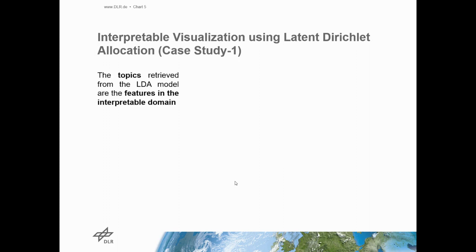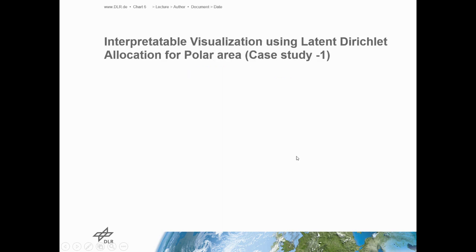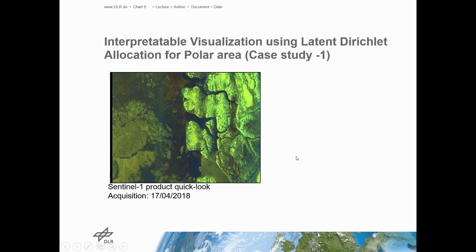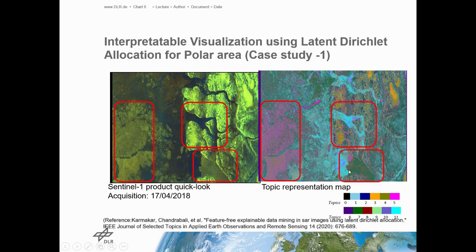The first case study produces interpretable visualizations using Latent Dirichlet Allocation. We used different levels of domain knowledge to produce different levels of interpretability: low, medium, and high interpretability. Another example of interpretable visualizations from the first case study is the topic representation map that shows the correspondence between the interpretable map and the product quick look from satellite images. This correspondence demonstrates how the model works and supports the idea of interpretability.